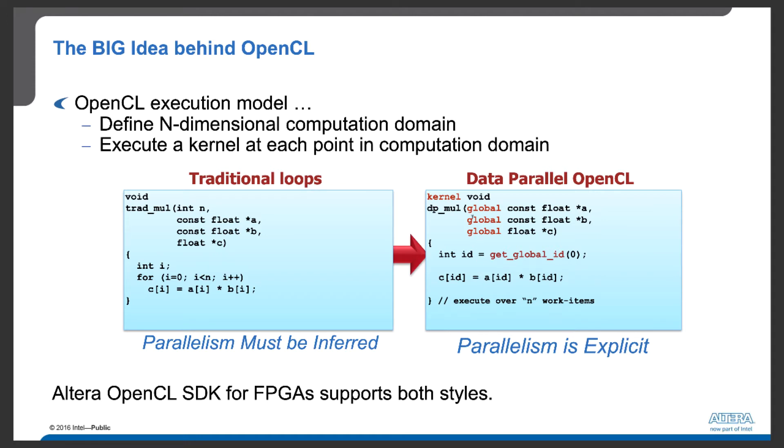Specifically, this kernel function takes three arguments: two input vectors and an output vector. Within this kernel, we use this API, get_global_id, to find the index to these vector pairs.